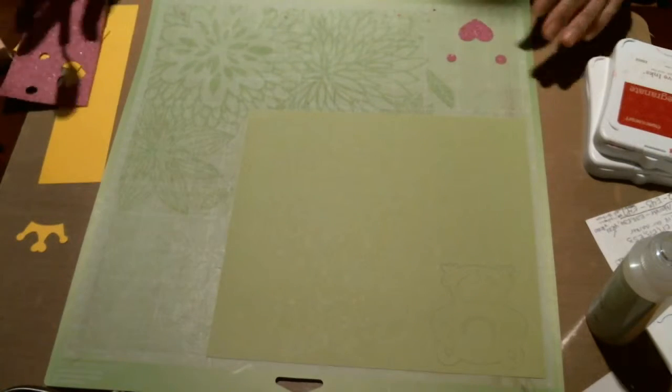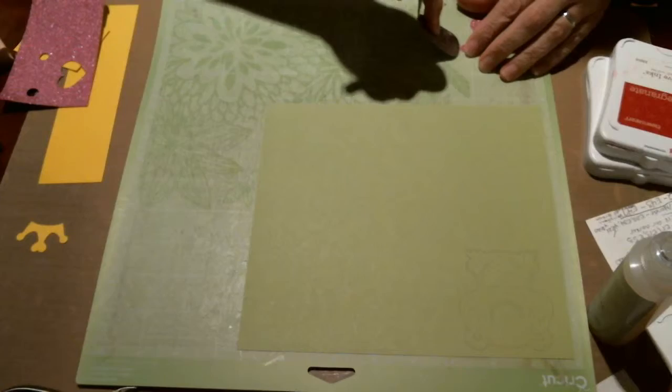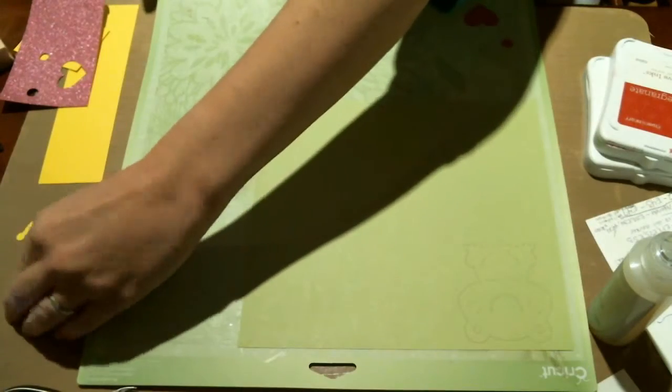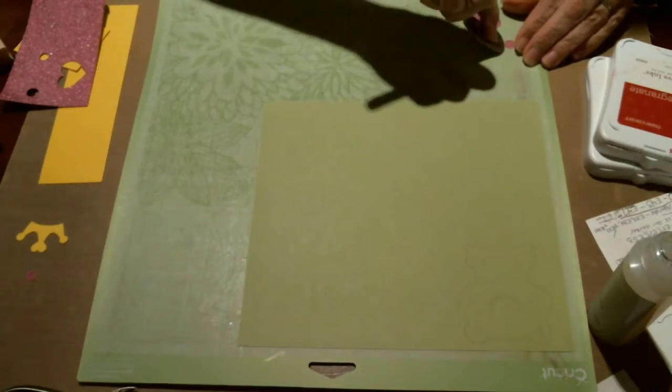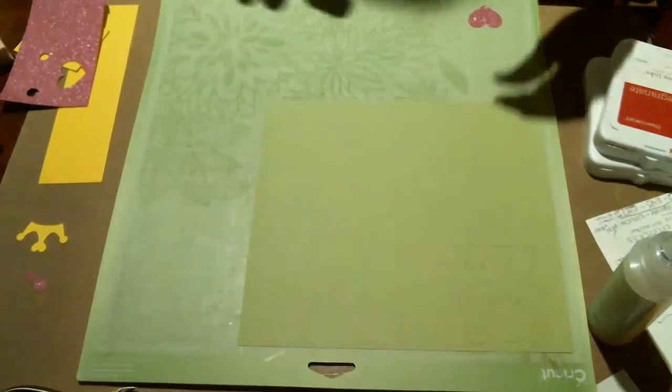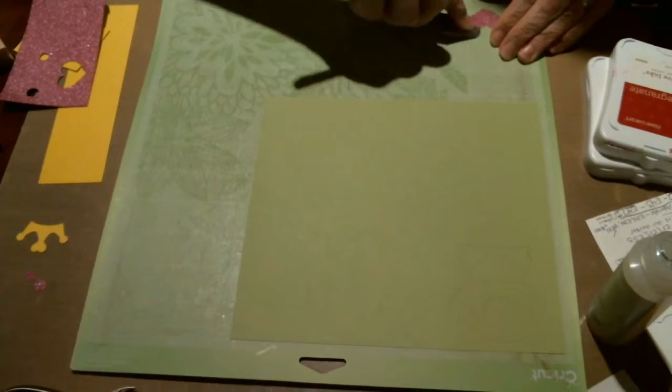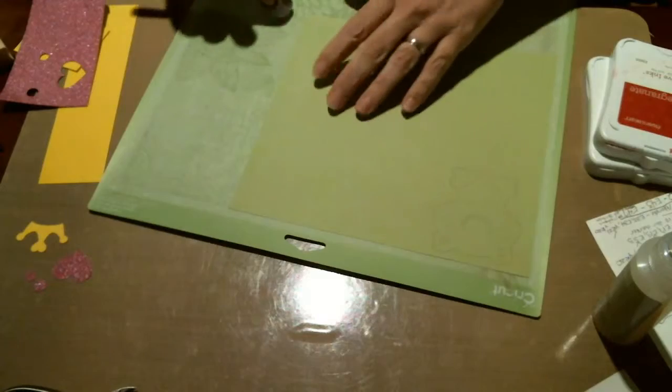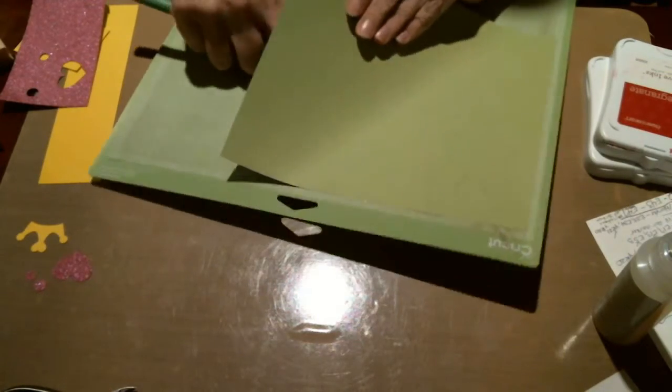I cut his body out of light green, his crown out of yellow, and I had some pink glittered cardstock for his little cheeks and the heart on his belly. I'm going to turn this little guy into a Valentine's card for my son.